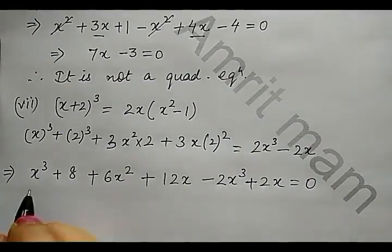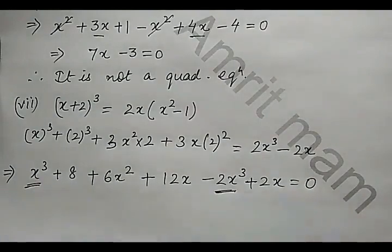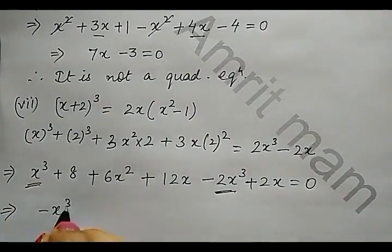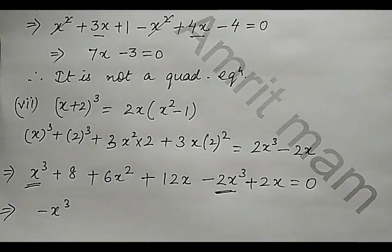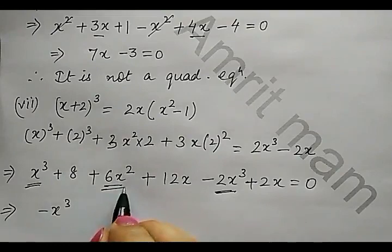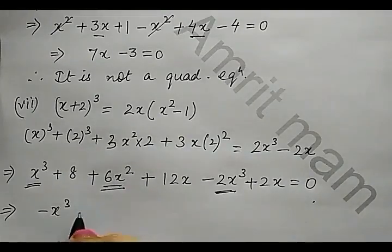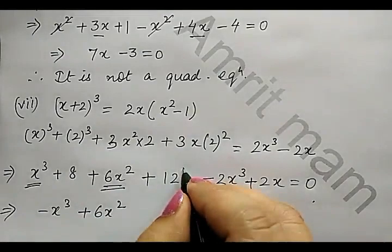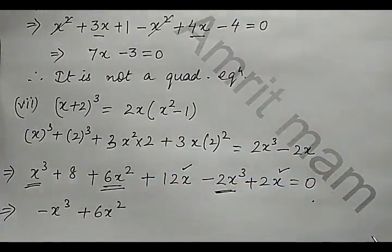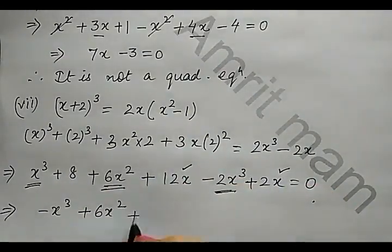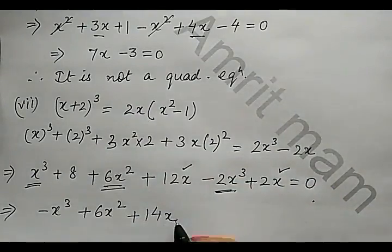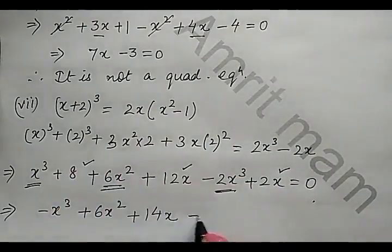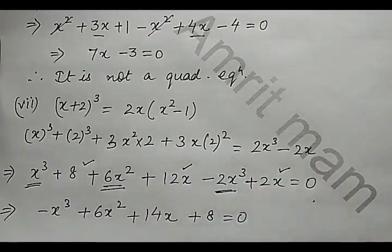Now x cube minus 2x cube so it becomes minus x cube, this is x square so there is only one term of x square so it is 6x square, 12x plus 2x so it becomes 14x, and the constant plus 8 is there. It equals 0.